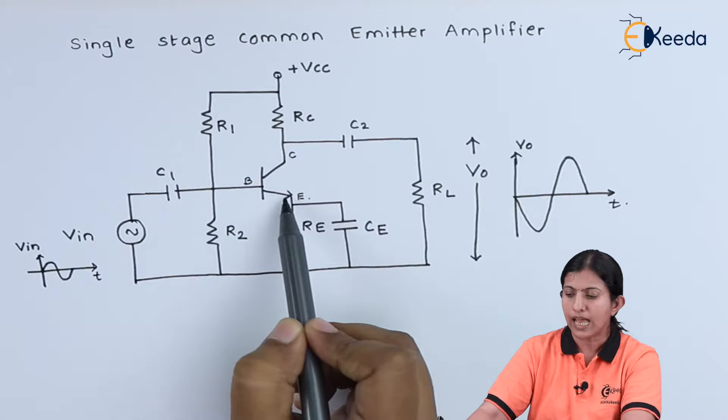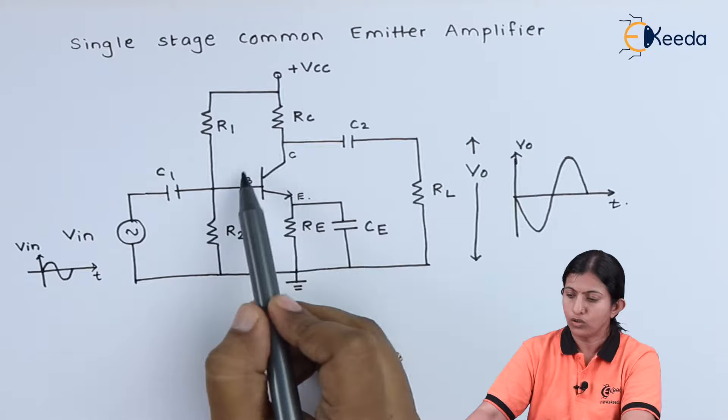It has three terminals: collector, base, and emitter. This arrow at the emitter terminal indicates the direction of the current.